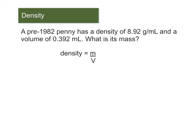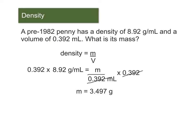And so now we're going to plug in the things that we know. So we know that the density is 8.92 grams per milliliter. And that's going to equal m, which is our mass, which is what we're trying to find, divided by 0.392 milliliters. So in order to do this, this is just a little bit of an algebra review. We're going to multiply both sides by 0.392. And so these will cancel out. And then we're going to end up with 0.392 times 8.92. And that's going to give us 3.497 grams, which is 3.5 grams.